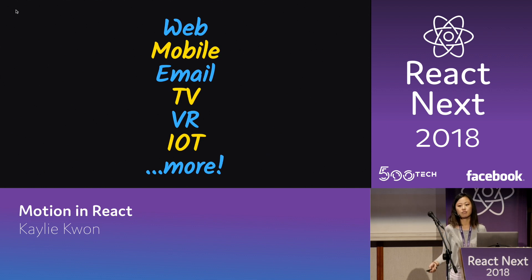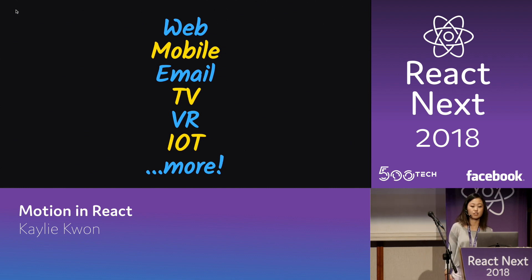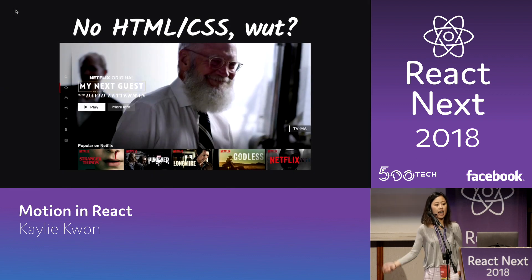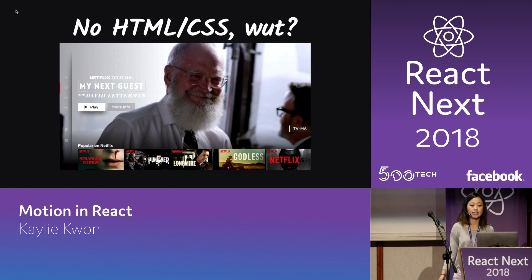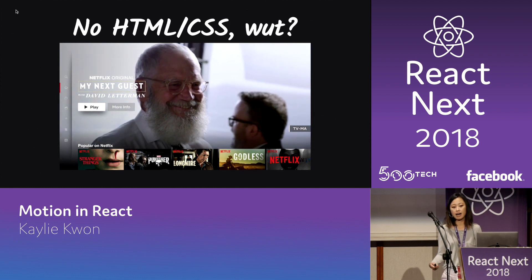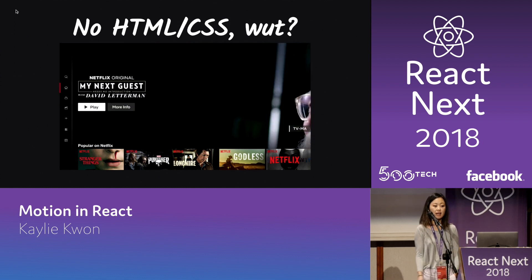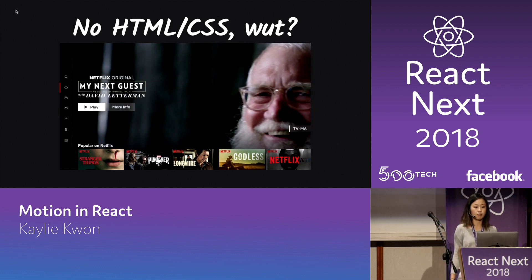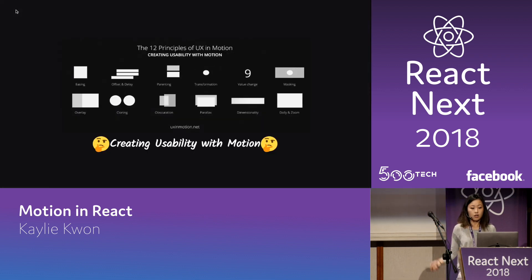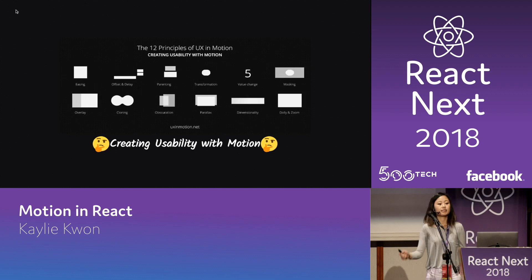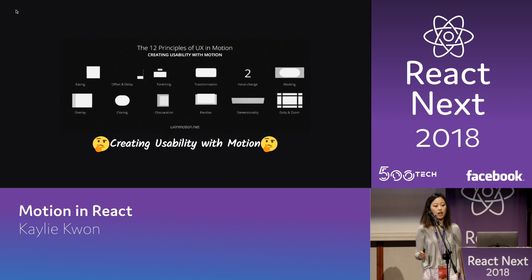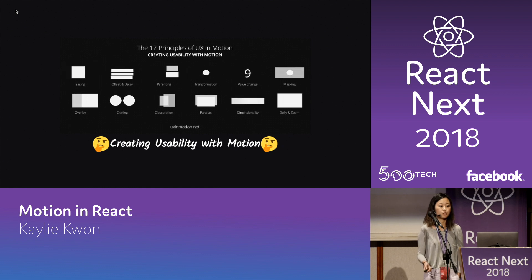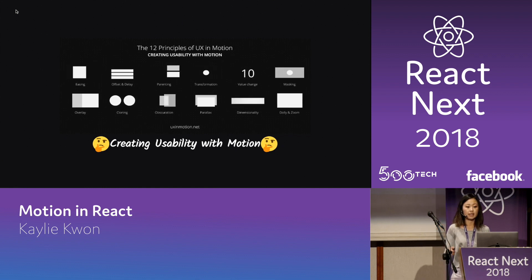You have to ask yourself questions like: what features do I have available? Do I have things like requestAnimationFrame? Do I have HTML and CSS? I ask that because at one of the teams I support — the TV UI team at Netflix — we don't have a traditional DOM-like environment. Everything is JavaScript. So the environment not only determines what capabilities you could use, but it also should determine how you design the final product.